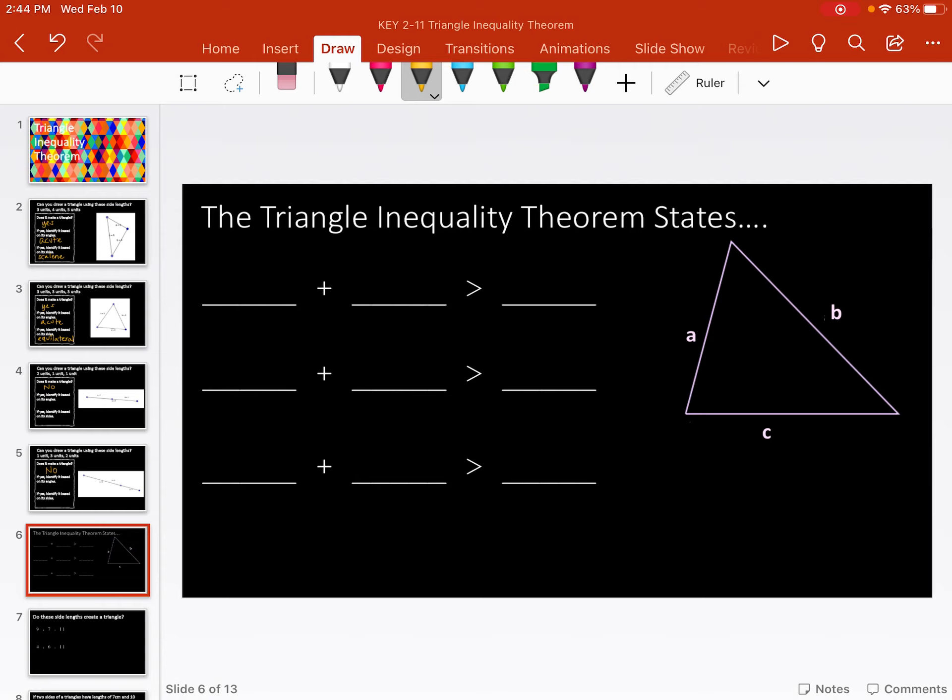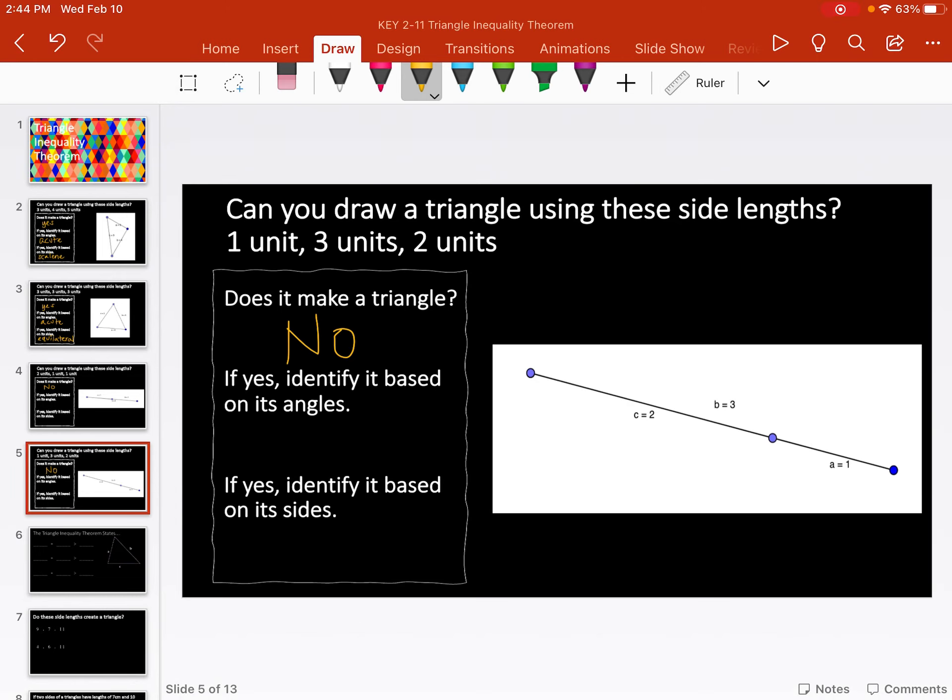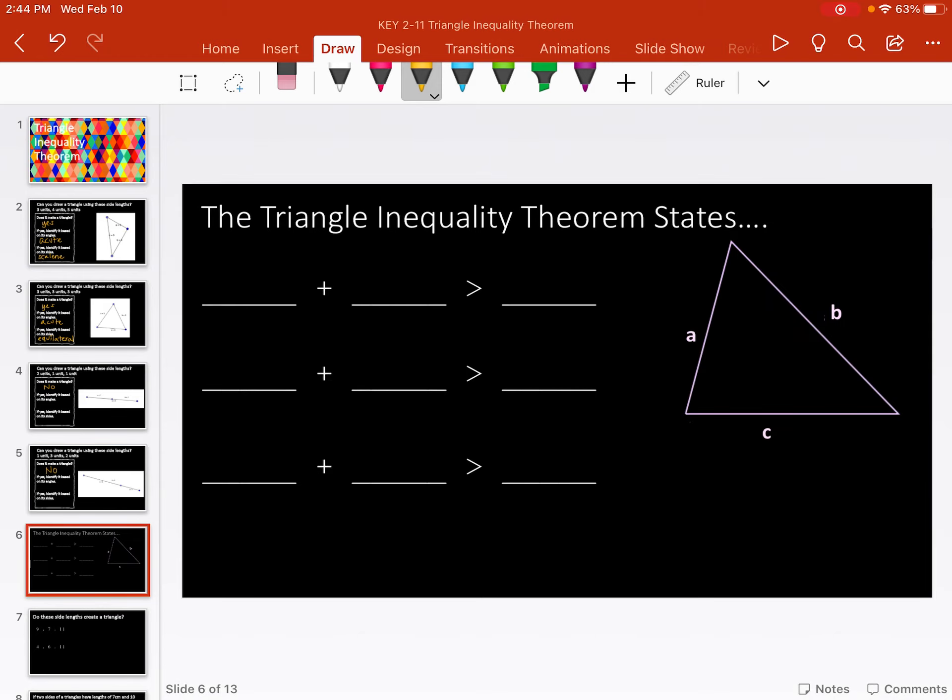This is what the triangle inequality theorem is about. It's about how you would know if a triangle can be made or created from various side lengths. And what we kind of proved with these is that if the two side lengths, the two shortest side lengths equal the longest one or are less than the longest one, then it's not going to be able to make a triangle. So the way we can check that is using this theorem.